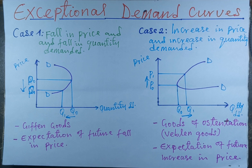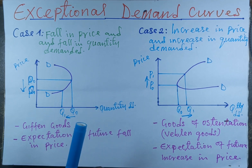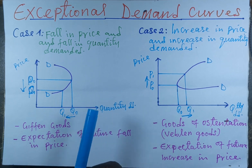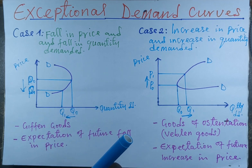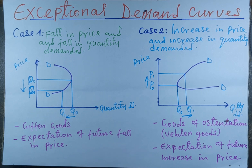In our previous video we looked at the law of demand and the reasons why the demand curve slopes downward. But in today's video we have seen a contradiction — the abnormal or exceptional demand curve, which is a contradiction to the law of demand. See you in the next video. Please subscribe to my channel on YouTube and ring the notification bell to get notified whenever I upload.